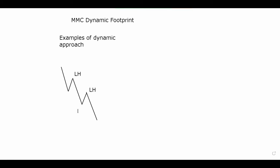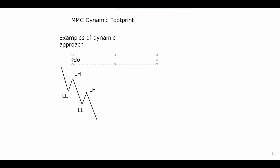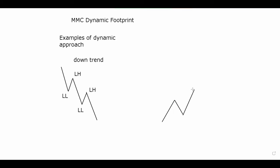A downtrend and uptrend consist of lower lows and lower highs. LH represents lower high and LL represents lower low. A lower low is a low that is lower than the previous lower high. As it goes down it becomes lower and lower, and the ones on top are called lower highs. This series appears when the market is going to the downside - it creates a series of lower lows and lower highs.